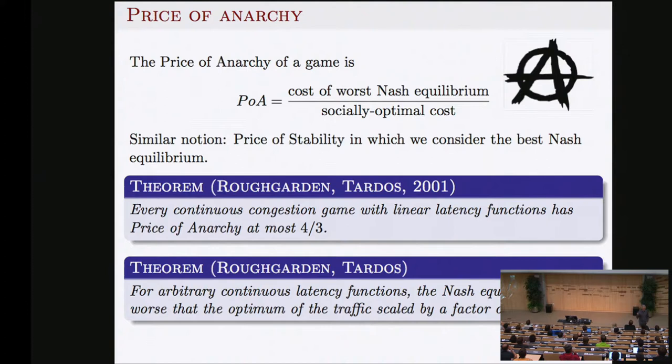Let's define the price of anarchy properly. The price of anarchy is the ratio of the cost of the worst Nash equilibrium over the socially optimal solution — anarchy versus central planning. It doesn't mean central planning is better overall; the latency is better there, but it may not be feasible. You cannot have somebody tell you exactly what road to follow.